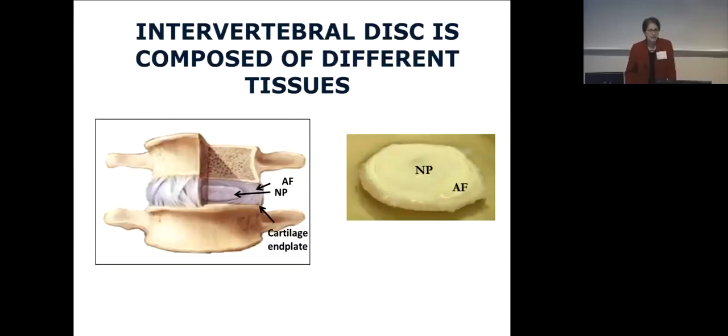These two tissues interface with the bone proximally and distally, the two vertebral bodies, through the cartilage end plate. Although it's composed of similar molecules as the nucleus pulposus — type 2 collagens and proteoglycans, a lot of water — the organization of those molecules is entirely different.